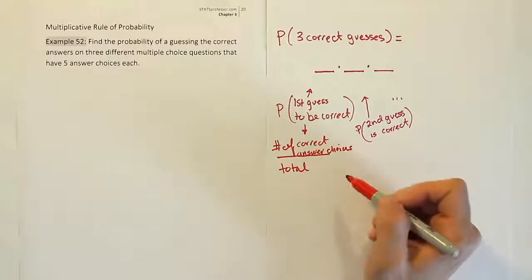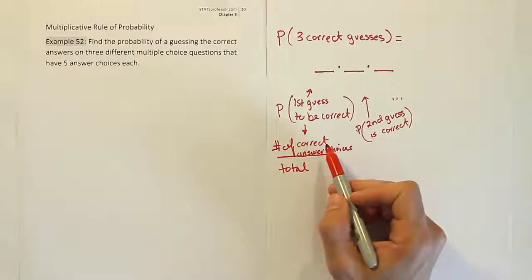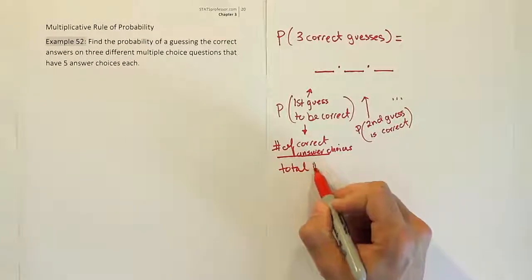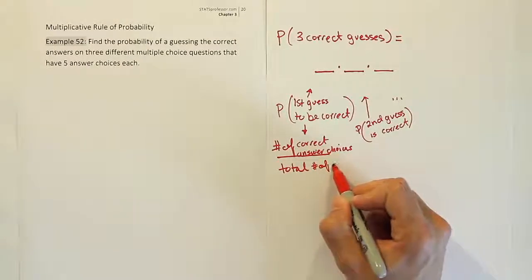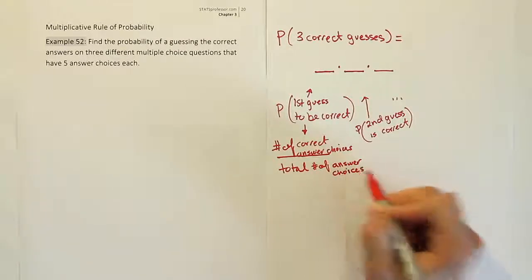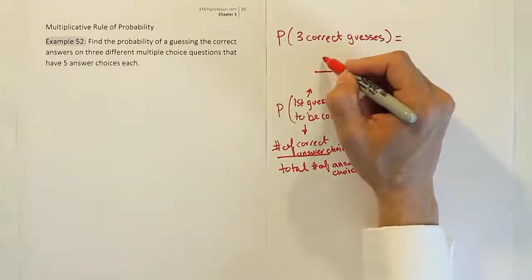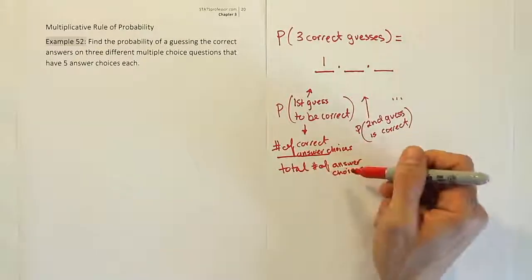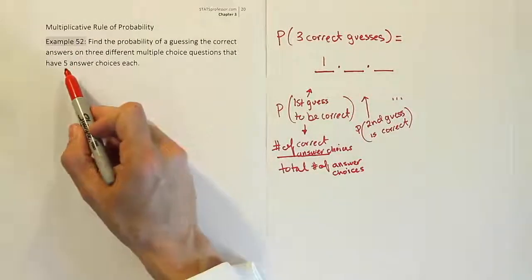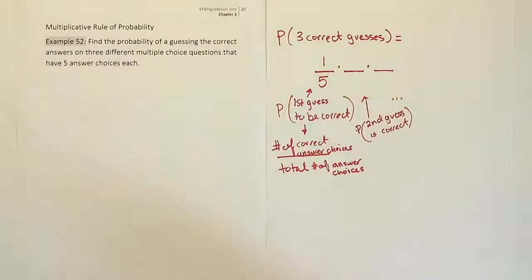So how many correct answer choices are there? Well, on a multiple choice test, typically there would only be one correct answer choice out of a list of options. So that will be one. And then what are the total number of answer choices? So that's the next thing to figure out. Well, that's pretty easy. The number of correct answer choices, as we said, should just be one. And the total number of answer choices is given in the problem because they say there are five answer choices each. So it's a one-fifth chance that when we take a random guess on a question, we get it right.